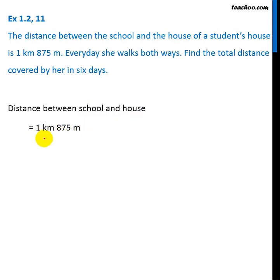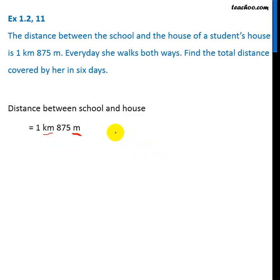Given that the distance between school and house is 1 kilometer 875 meters. Here we are talking in kilometers as well as meters, so what we will do is convert this distance into meters and do everything in meters. It will make our calculation easier.